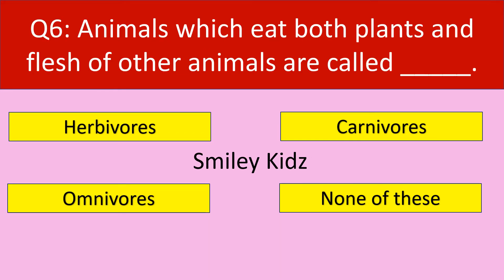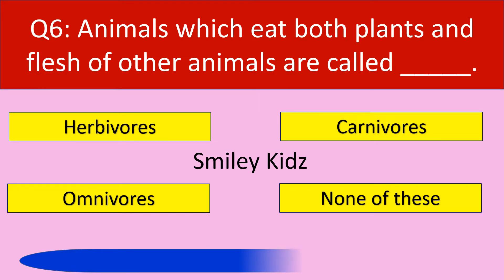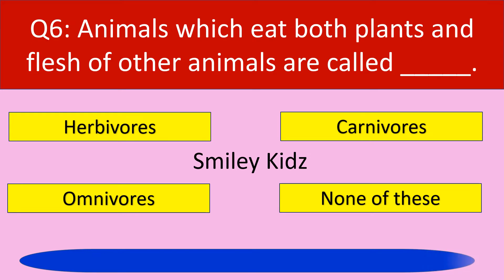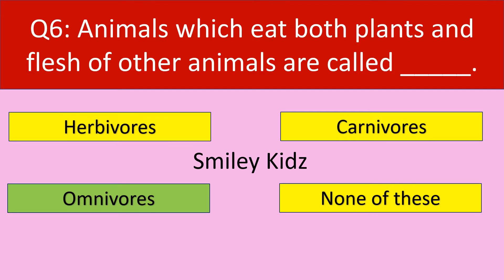Question number 6. Animals which eat both plants and flesh of other animals are called. Options are herbivore, carnivore, omnivore, none of these. Your time starts now. The correct answer is omnivore. Animals which eat both plants and flesh of other animals are called omnivores.